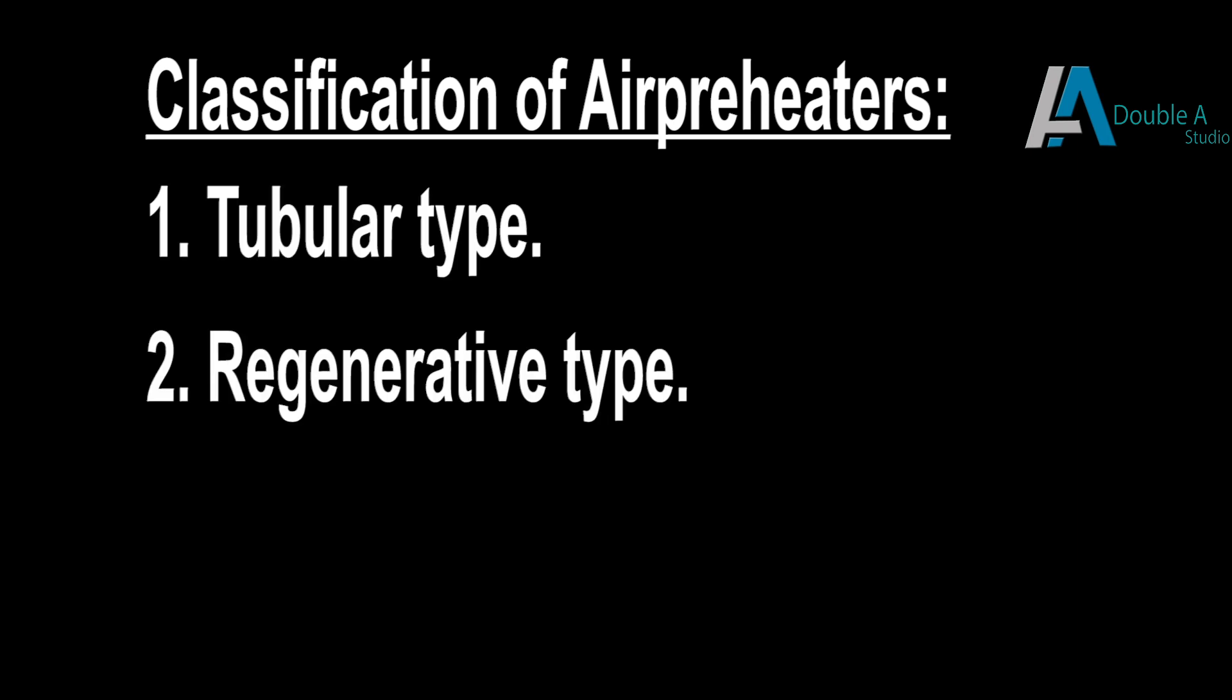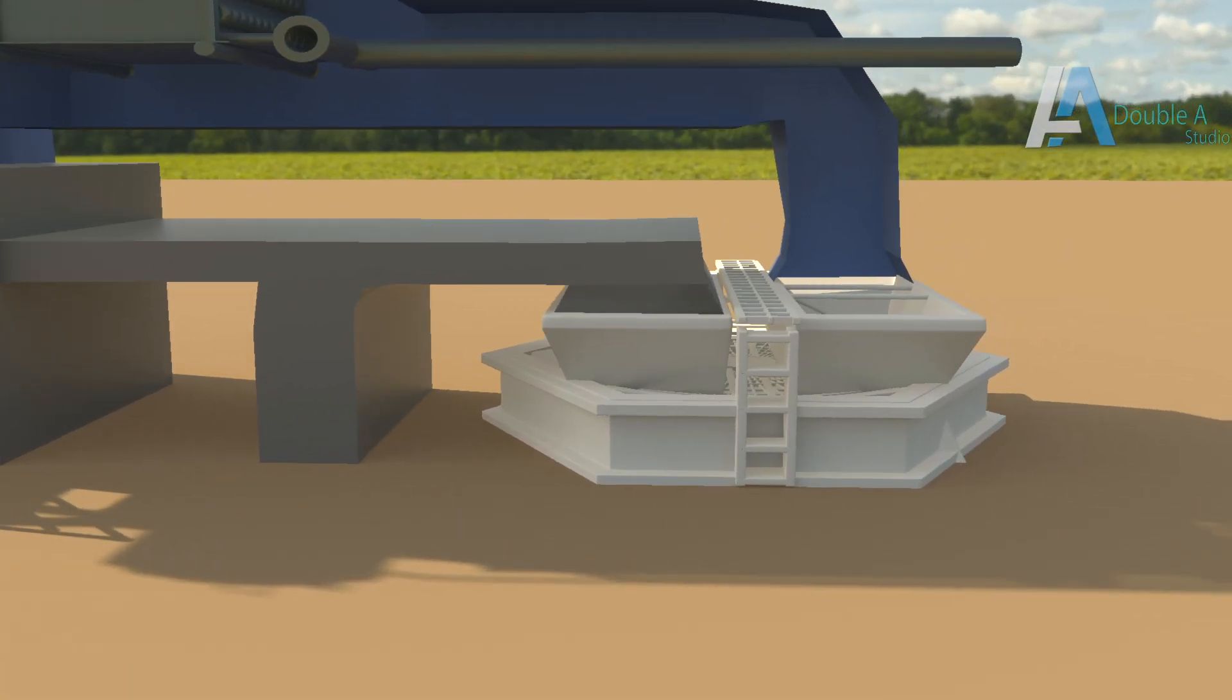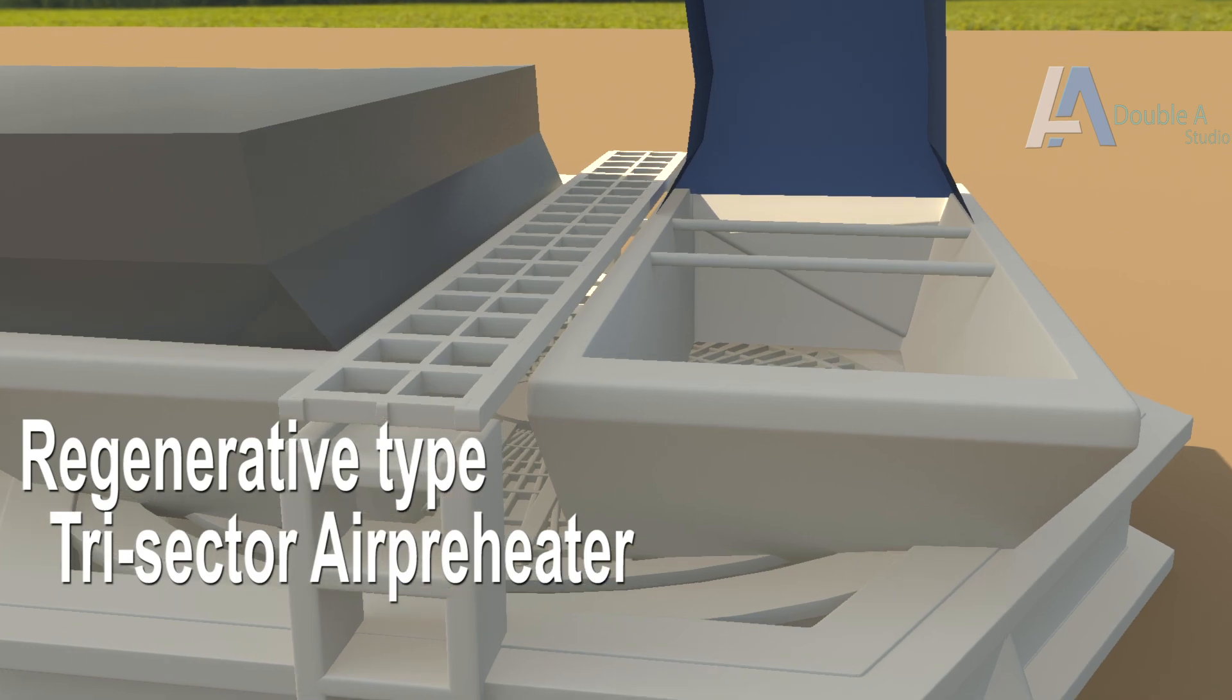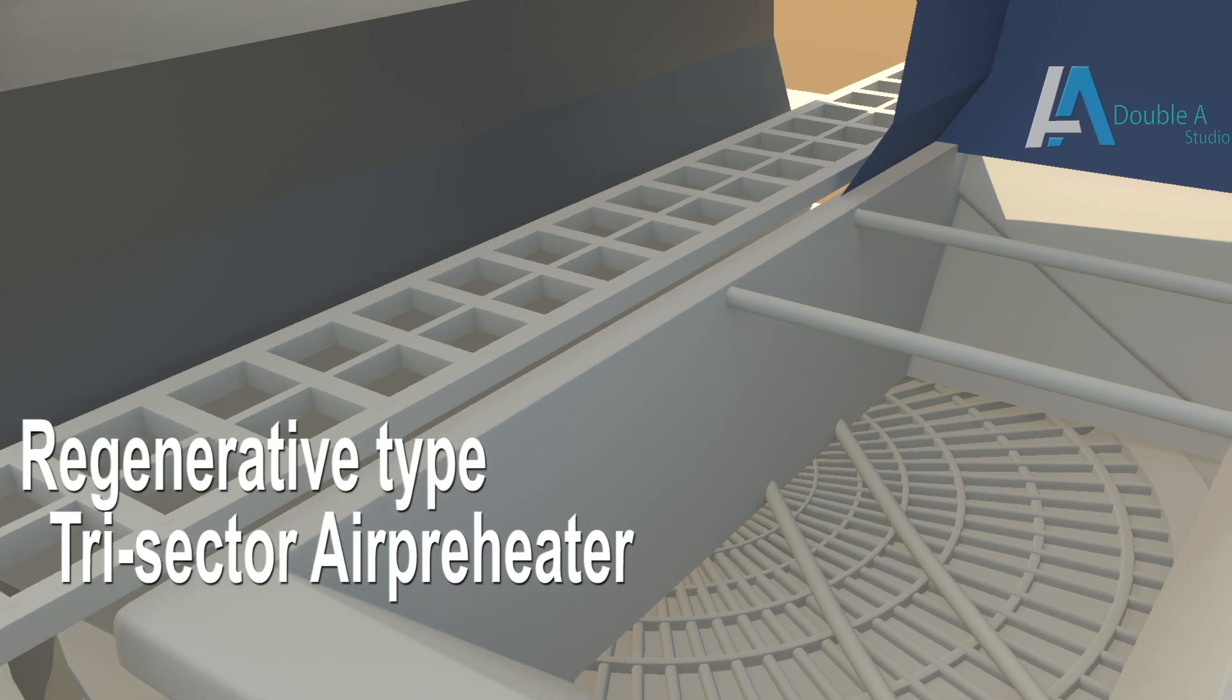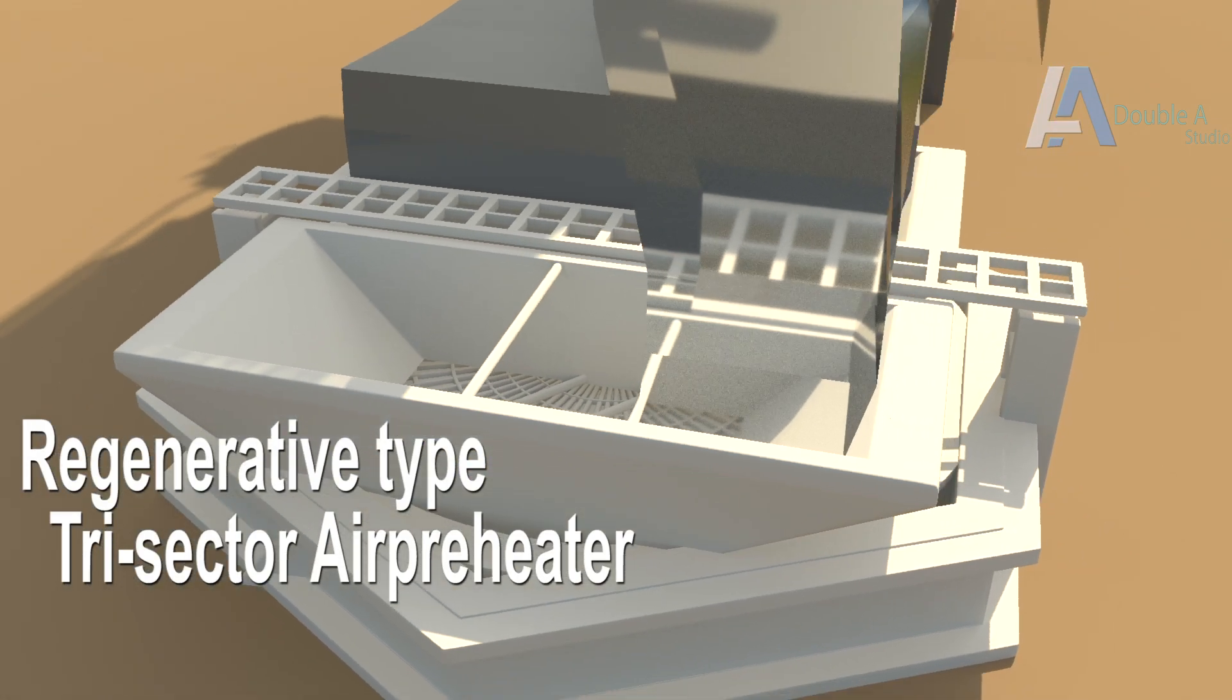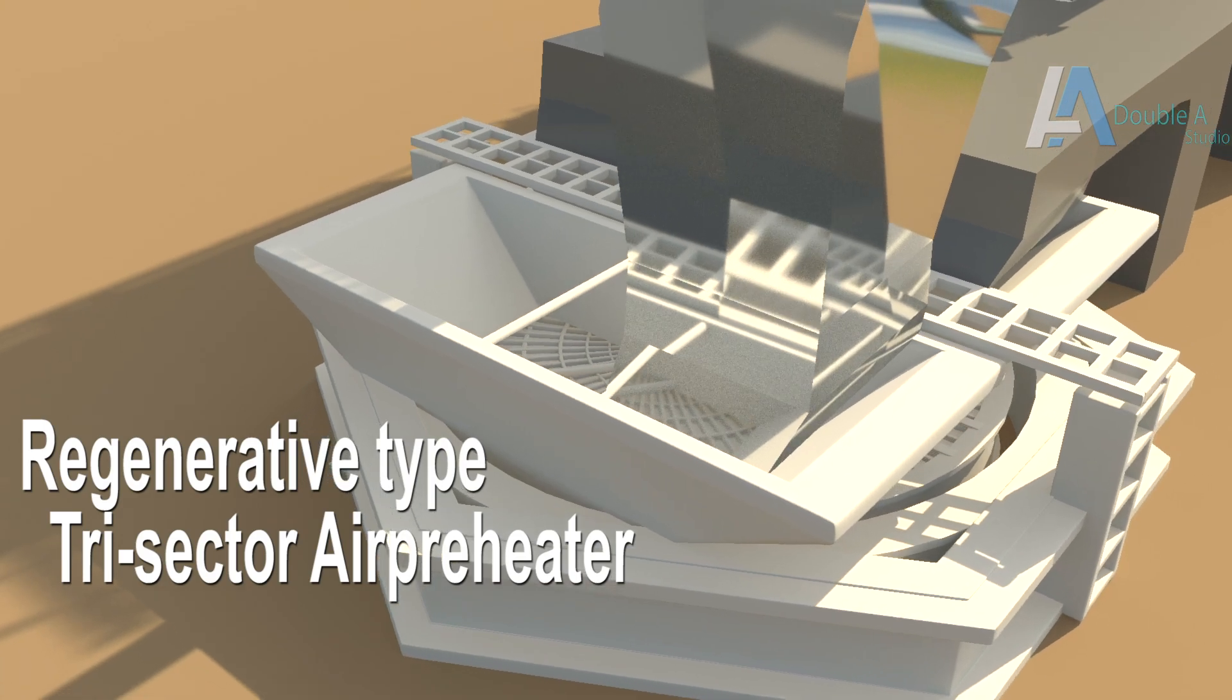Air preheaters are broadly classified into two types, tubular type and regenerative type air preheater. Regenerative type is most efficient and compact type of heat exchanger. Here we are going to discuss regenerative type, tri-sector air preheater, which is widely used in thermal power plants.